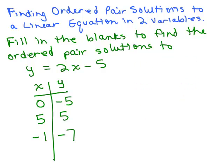If you want to write these as ordered pairs, remember how they look: 0, negative 5; 5, 5; and negative 1, negative 7. If you were to graph those 3 ordered pairs on the xy plane, the rectangular coordinate system, and draw the line through those 3 points, you would have all the ordered pair solutions on that line. So let's go ahead and do that.